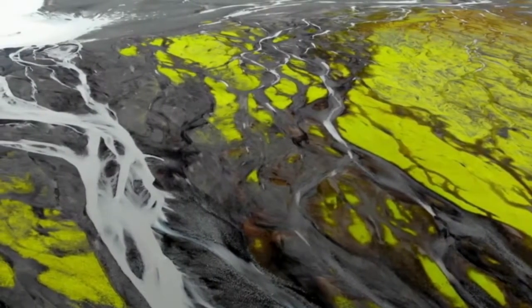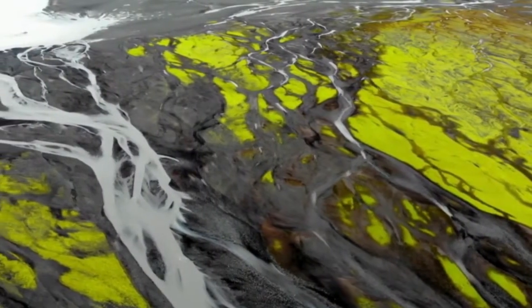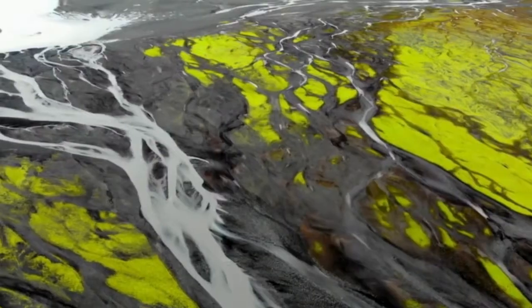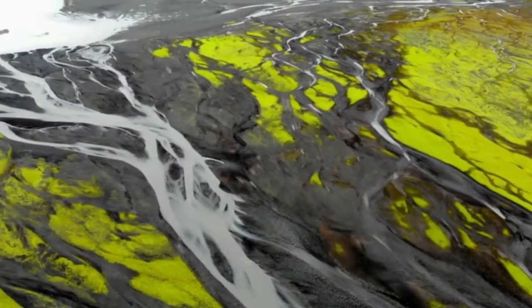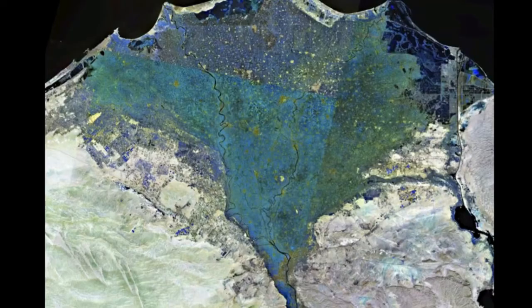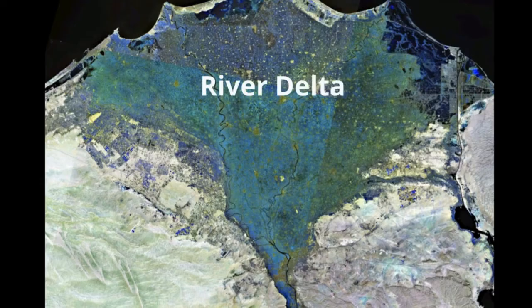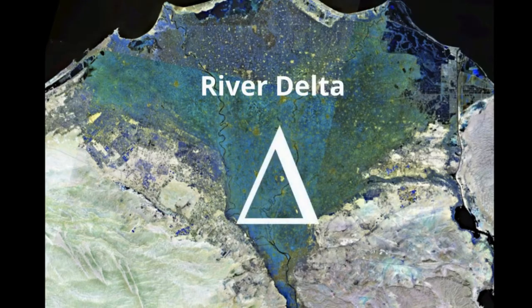This deposition of sediment may create a landform shaped like a triangle which is called a river delta. It is named a river delta because of its triangle shape which resembles the Greek letter delta. However, not all deltas are triangle shaped.